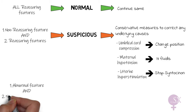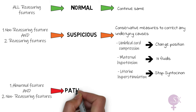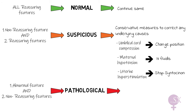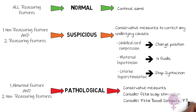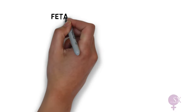If we have one abnormal feature and two non-reassuring features, this is defined as a pathological CTG. Management of a pathological CTG is very case dependent. We can try to adopt conservative measures again to improve the CTG, or we might decide to stimulate the baby by means of fetal scalp stimulation, or else consider fetal blood sampling or possibly expediting delivery.